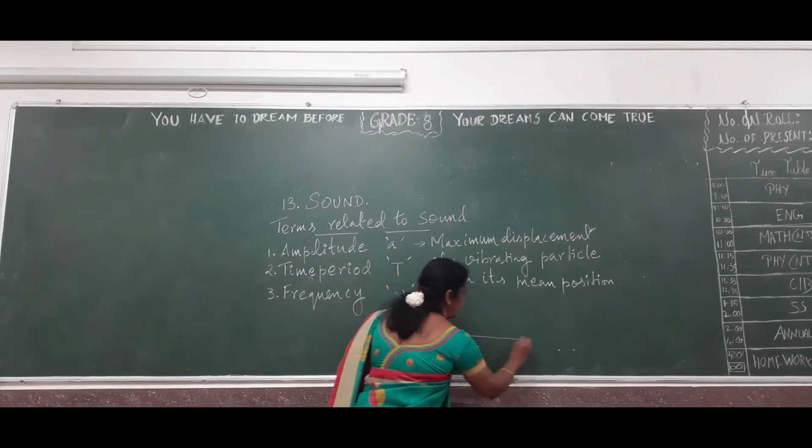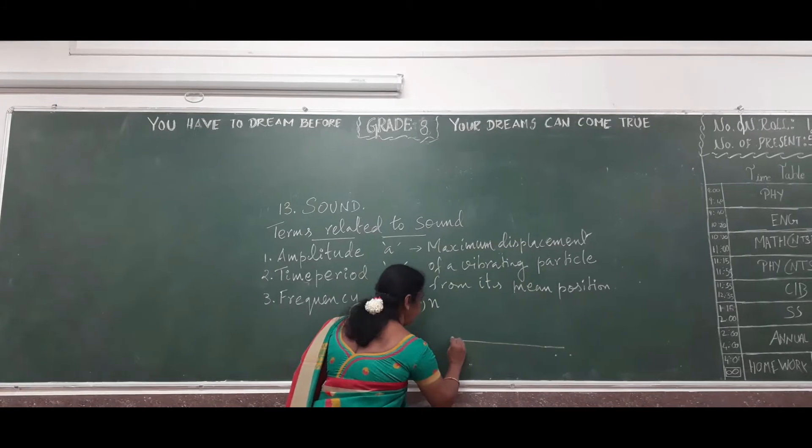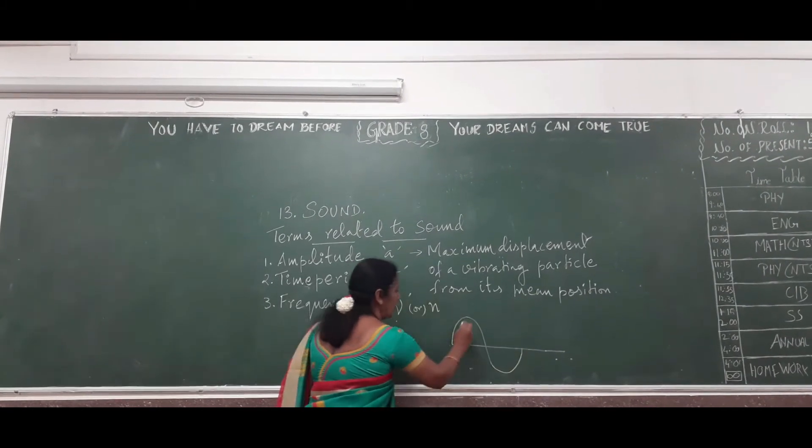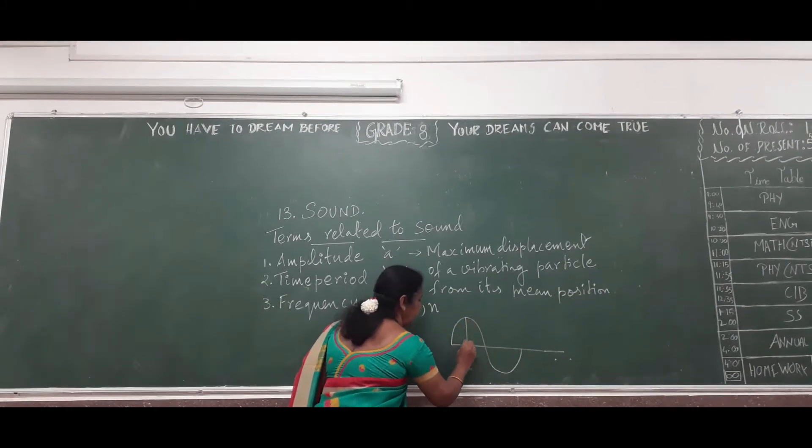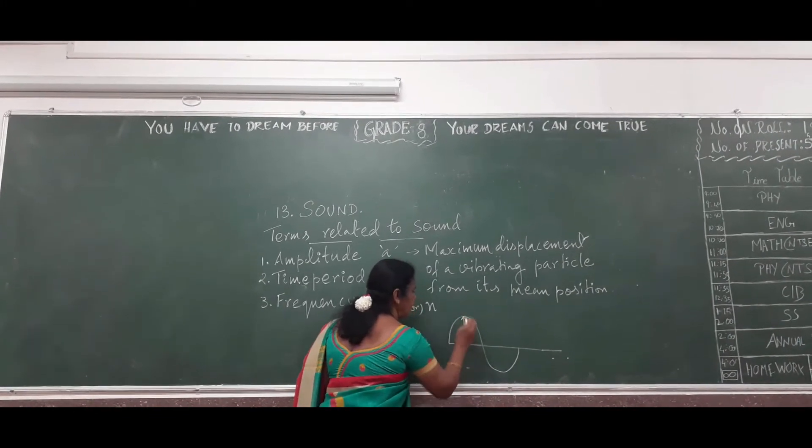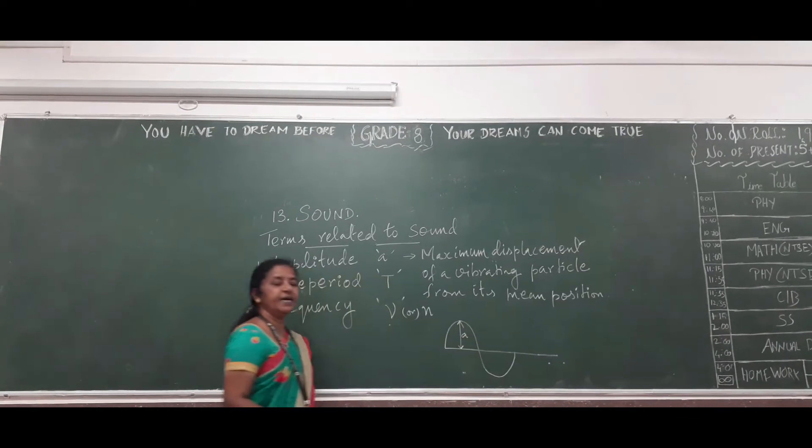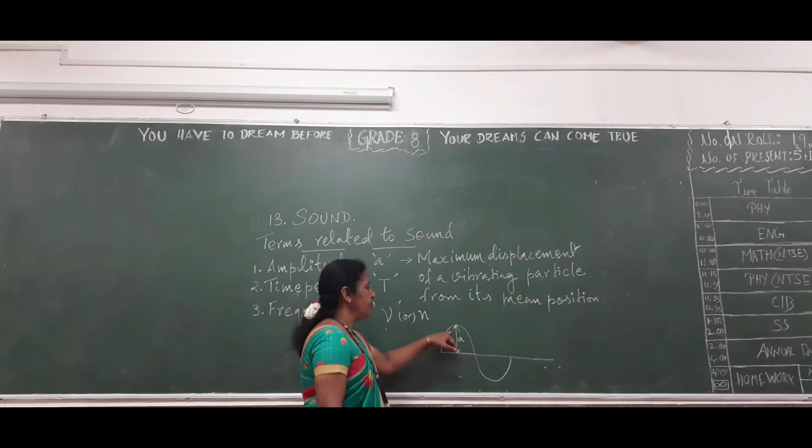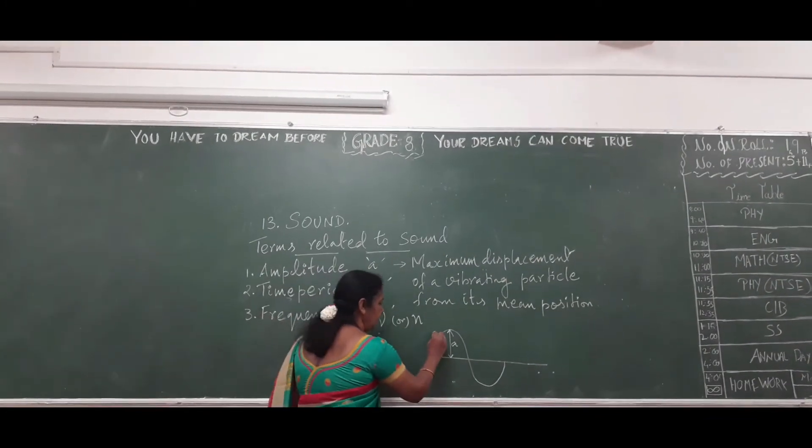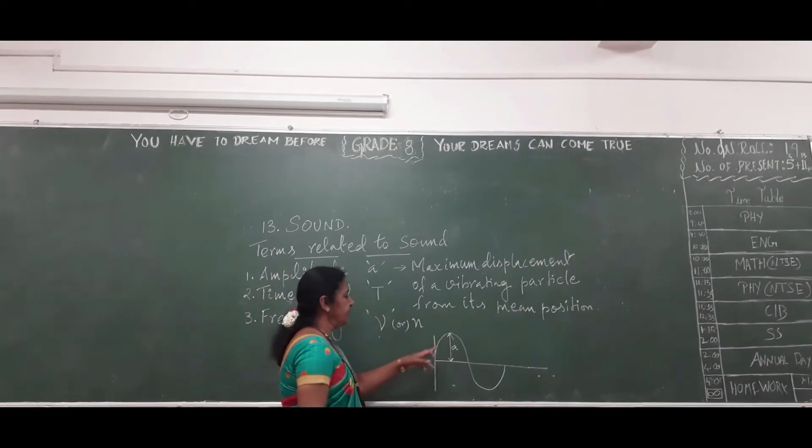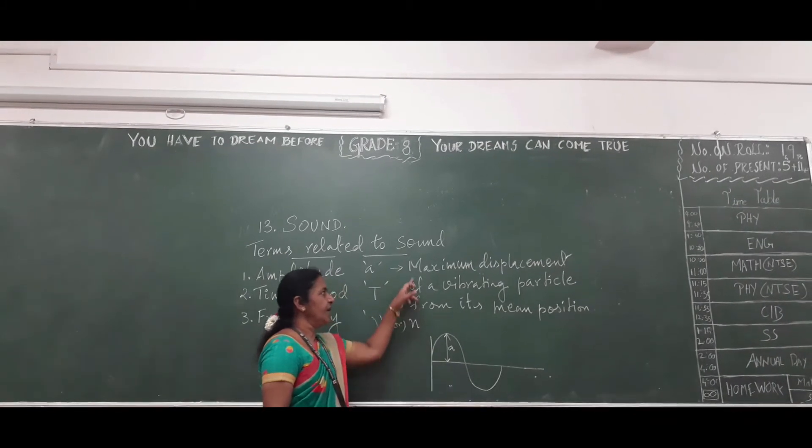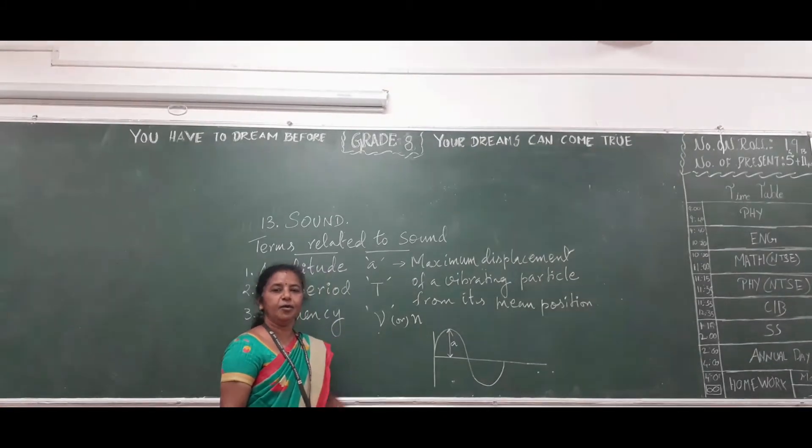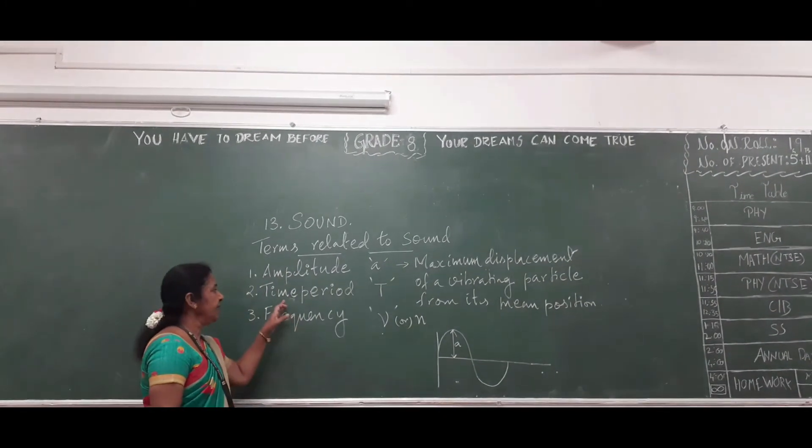Now I can explain with help of a graph, that is the waveform. The vibrating particle is moving from the mean position and it is denoted by the letter A. We have to consider the positive coordinate. The wave is in the positive coordinate and this is the maximum displacement of a vibrating particle from its mean position, denoted by the letter A.